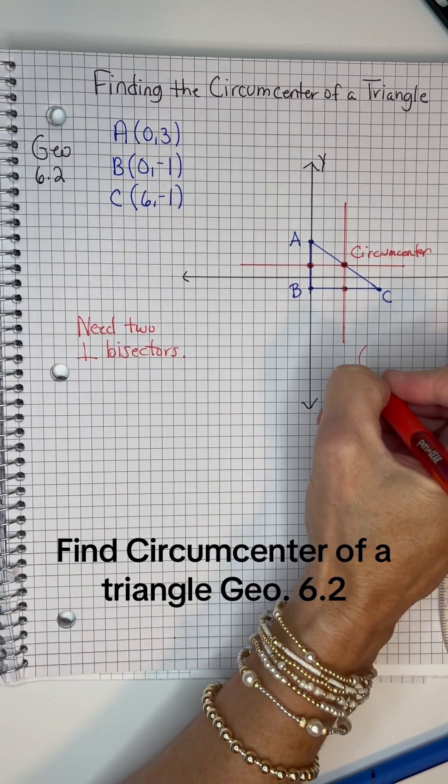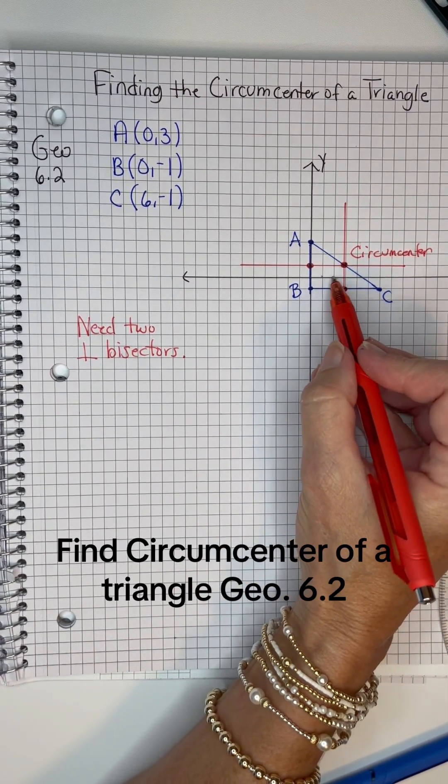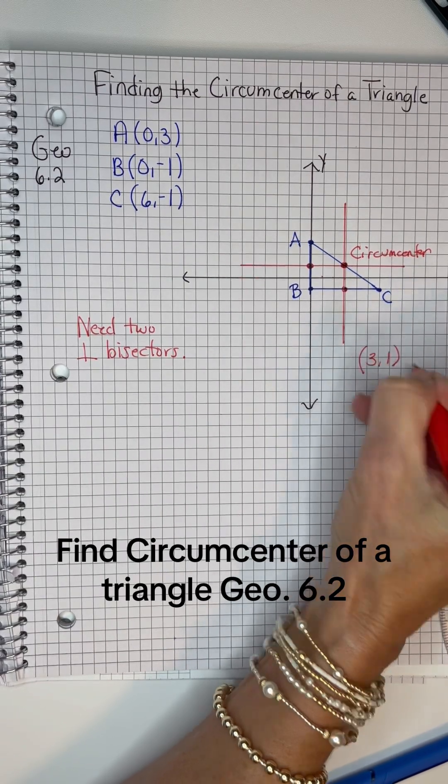And the circumcenter is at the ordered pair. Let's see. One, two, three, one. It's at three, one.